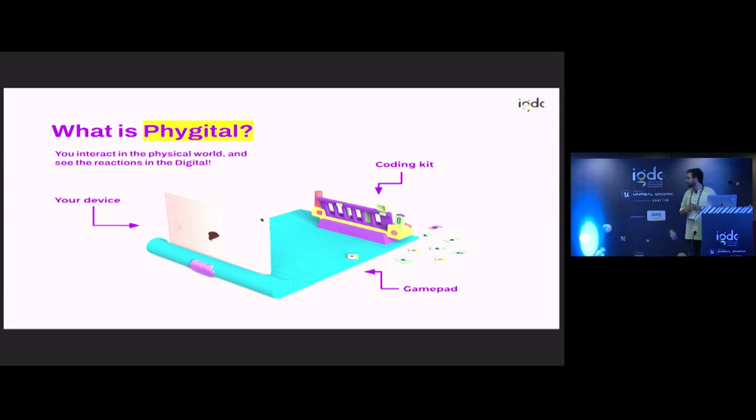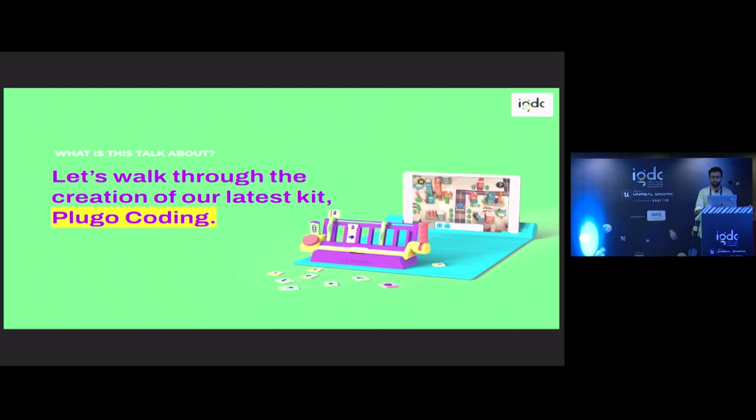But before that, phygital is not a very common word. This is our Plugo device, where the iPad sits in front of you on the gamepad at the right angle. The coding kit is how the kid inputs controls into the game. The iPad camera is capturing markers which are present at different specific points at the kit itself. That's how the physical and the digital marry together.